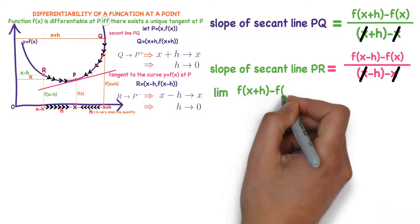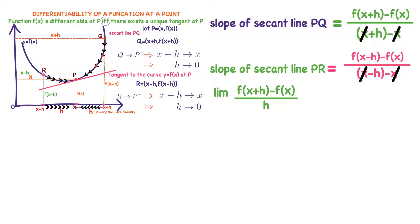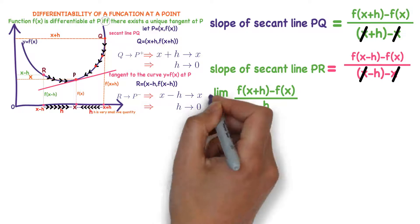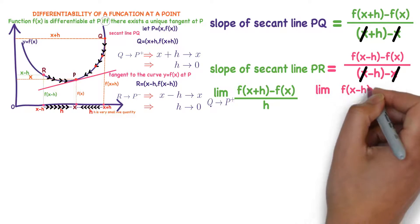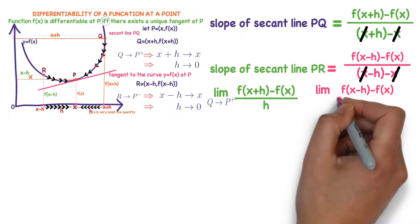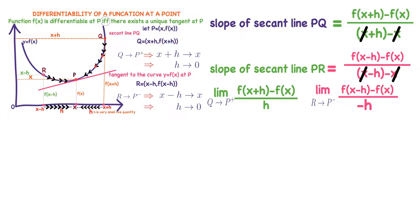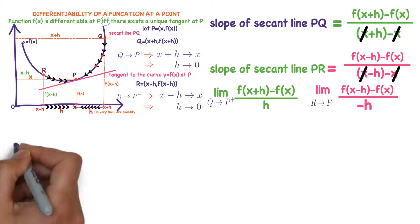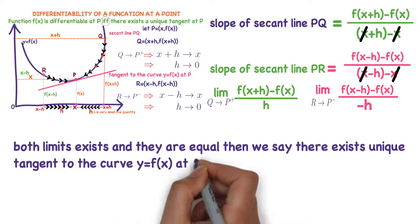What is the limiting position of the slope of secant line PQ as Q approaches P from the right? It gives the slope of the tangent to the curve at point P. Similarly, the limiting position of the slope of secant line PR as R approaches P from the left also gives the slope of the tangent at point P. If both limits exist and are equal, then there exists a unique tangent at point P.